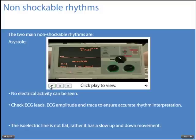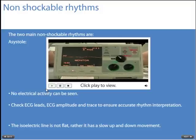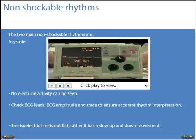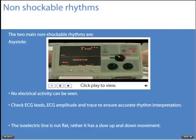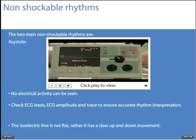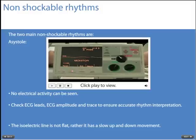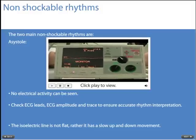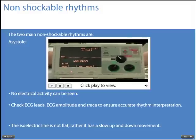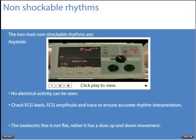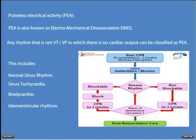There are two main non-shockable rhythms. The first is asystole, where there is no electrical activity to be seen. However, this does not mean the line on the monitor will be completely flat — asystole has a slight undulation to it. If the line is completely flat, you should check the pad placement and any ECG leads attached to ensure there is no fault.